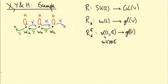A lot happened in the last video. We started with the representation of the group SU2 on a complex vector space V. We passed to the level of Lie algebras and got R* going from little SU2 to little GLV. Then we allowed ourselves to take complex linear combinations of little SU2, so we ended up with a complex linear Lie algebra homomorphism from sl2C to little GLV.